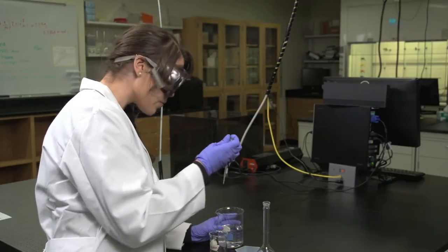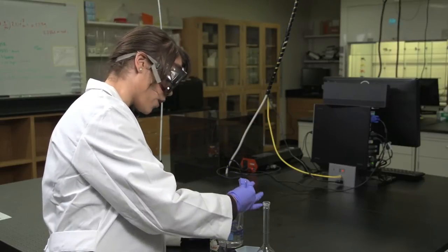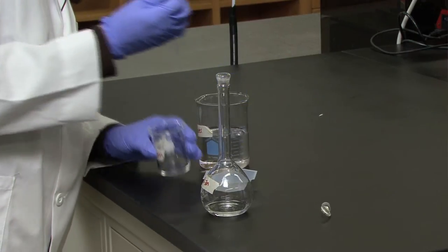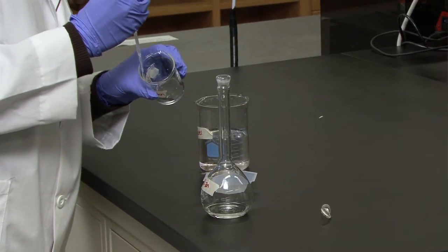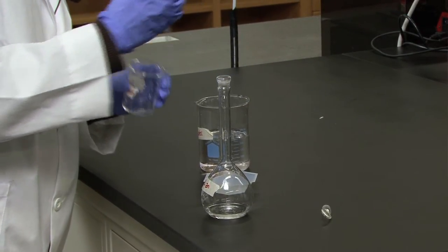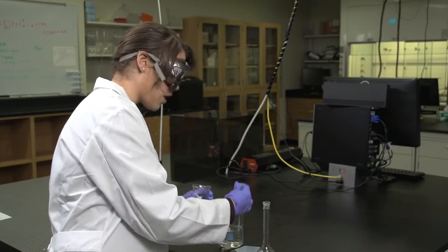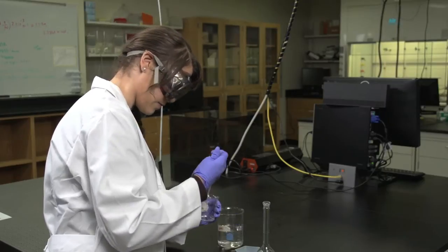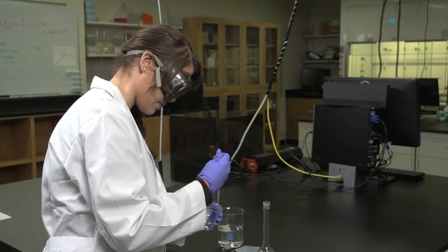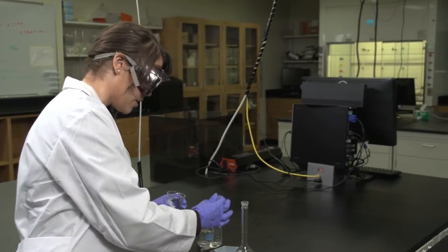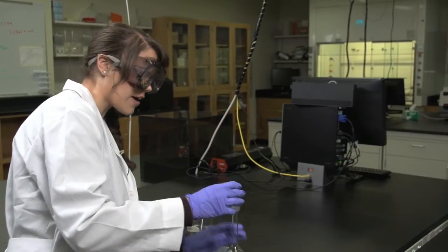I'm going to now rinse out my beaker with some water. I'm trying to squirt the water along the sides of the beaker to make sure that I have fully transferred all of the dissolved zinc. You want to do this step at least five times.